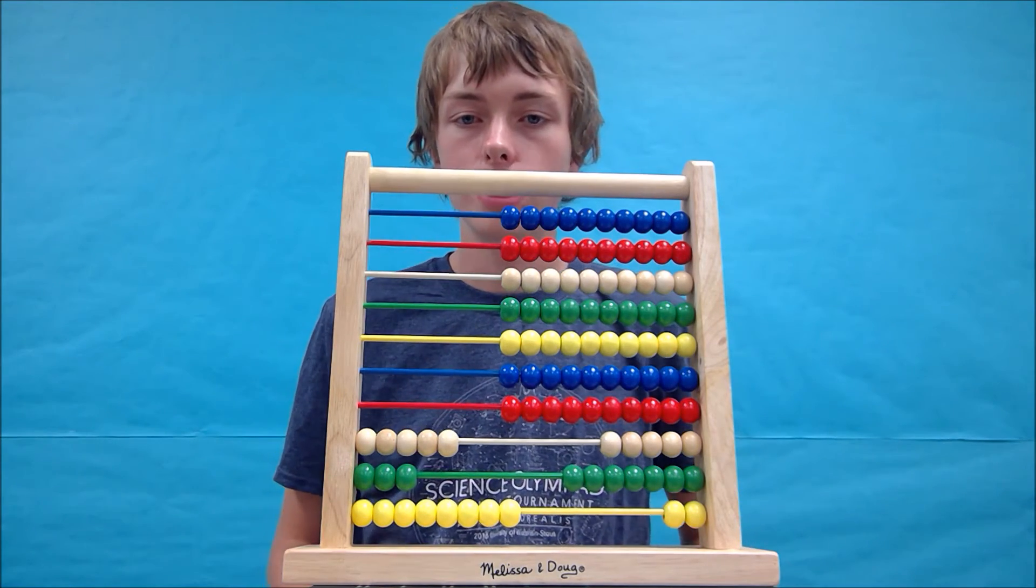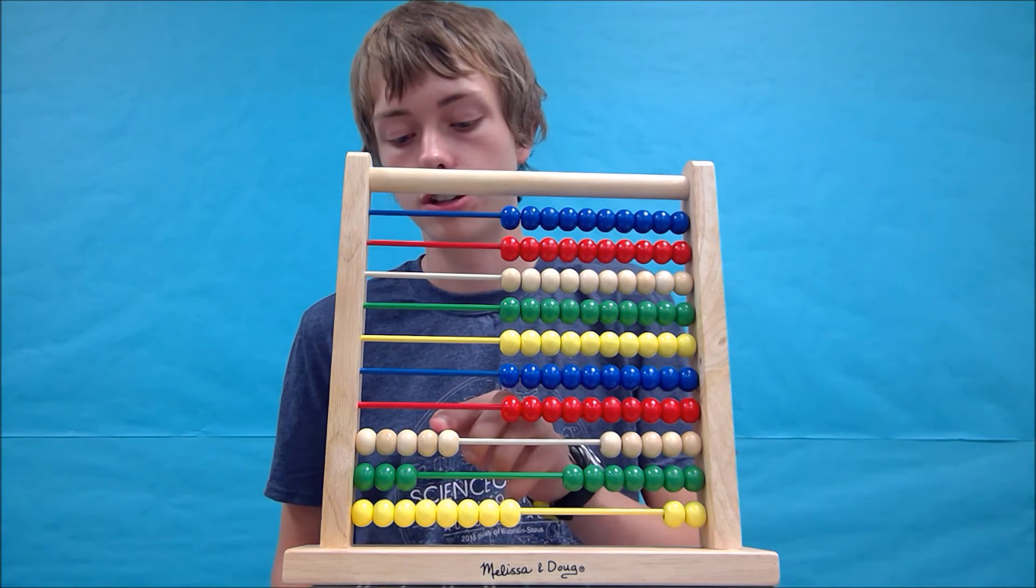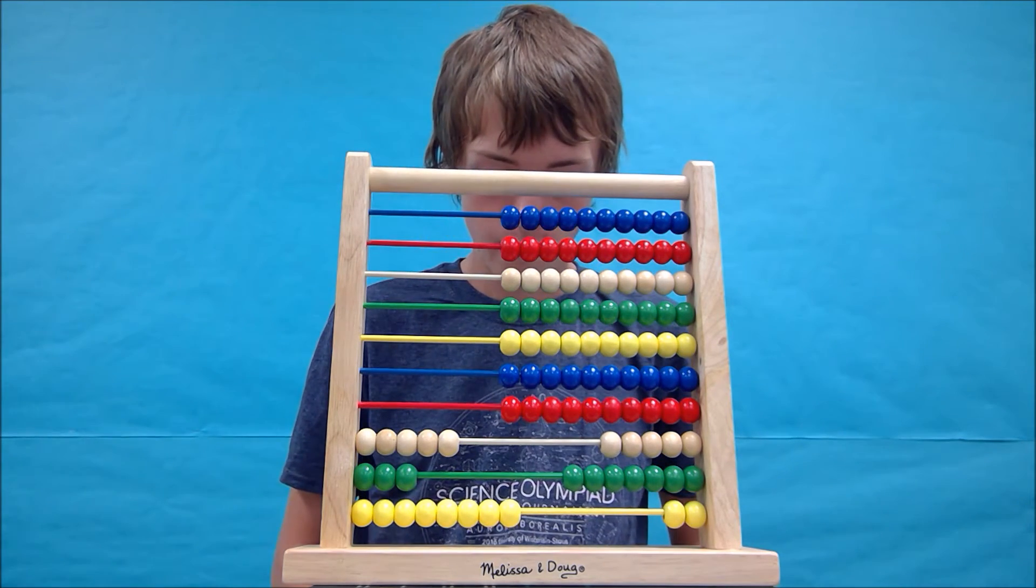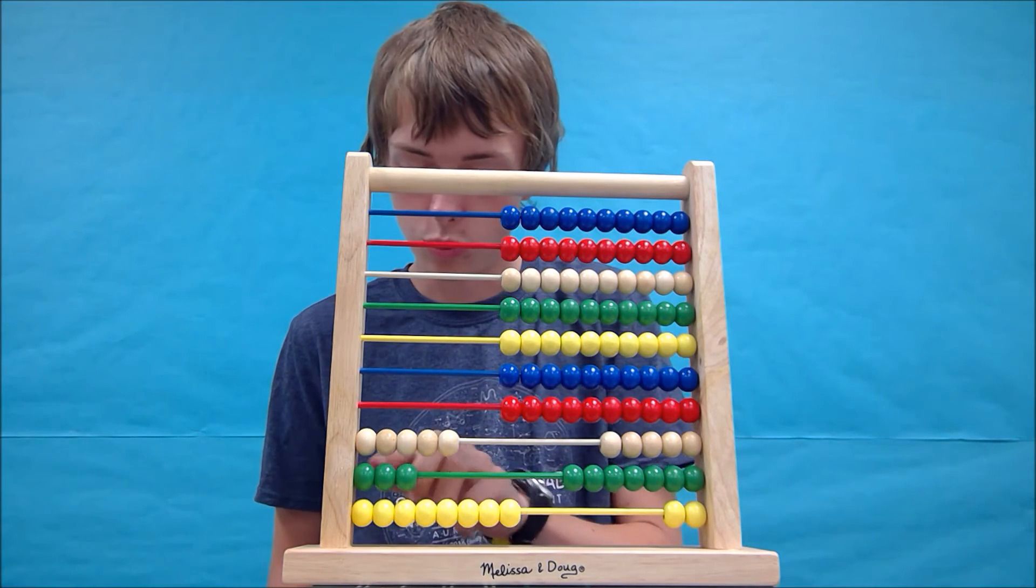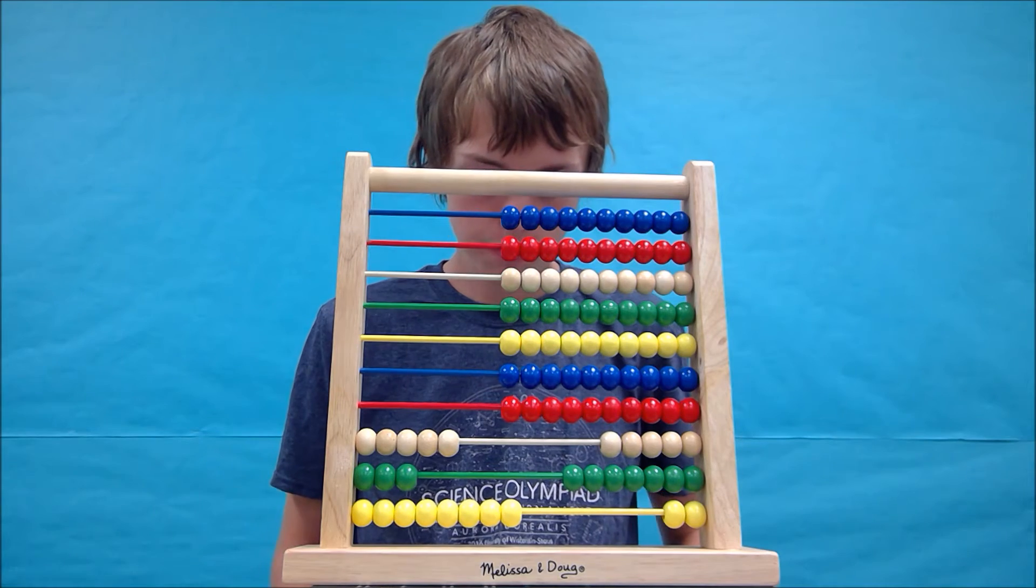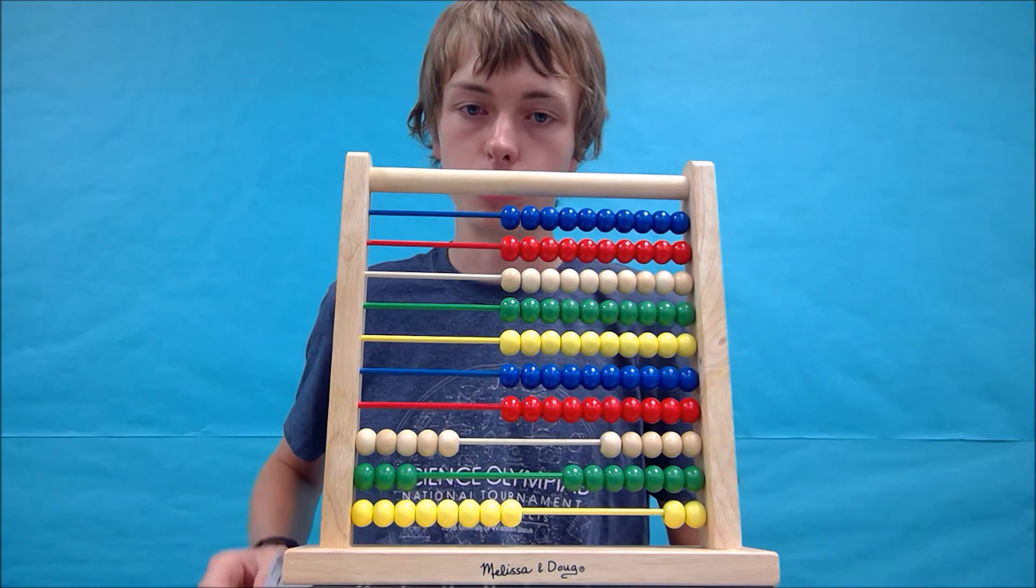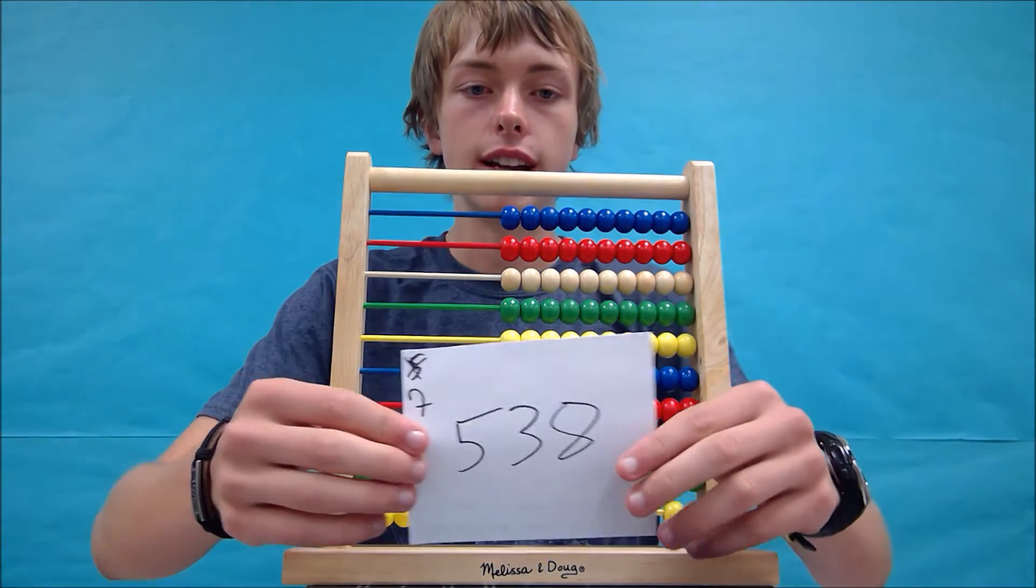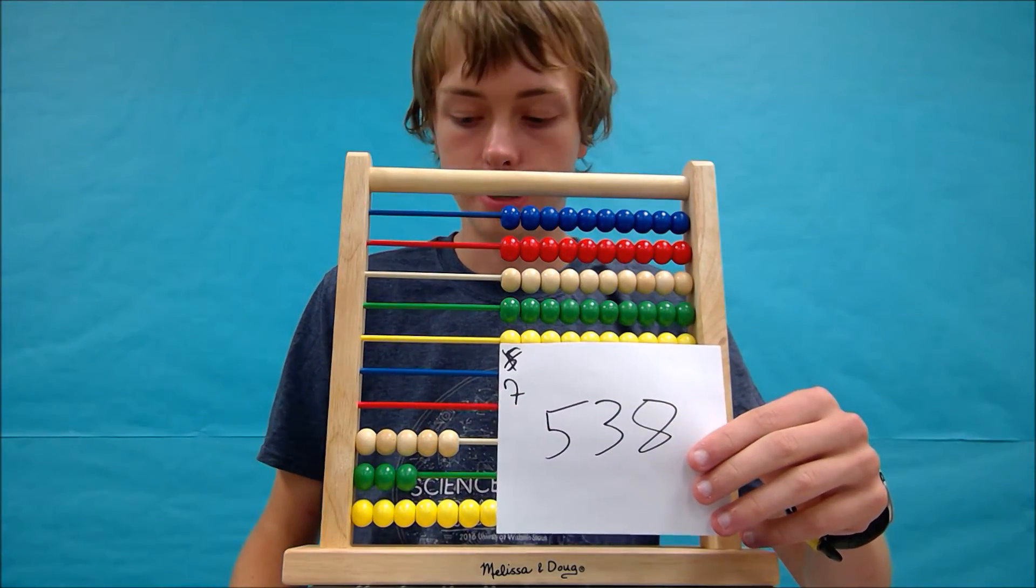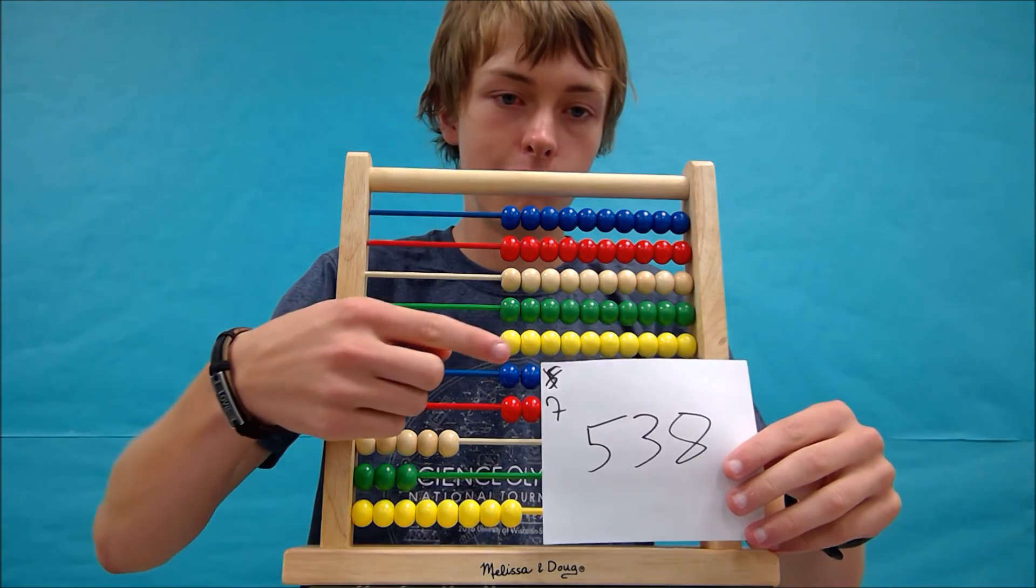I'm going to write this one down again. It's a little larger, still fairly easy to see, but still a little larger. So this, after subtracting those three numbers from 650, we have an answer of 538. And this is what the abacus should look like. Again, my notes are up here.